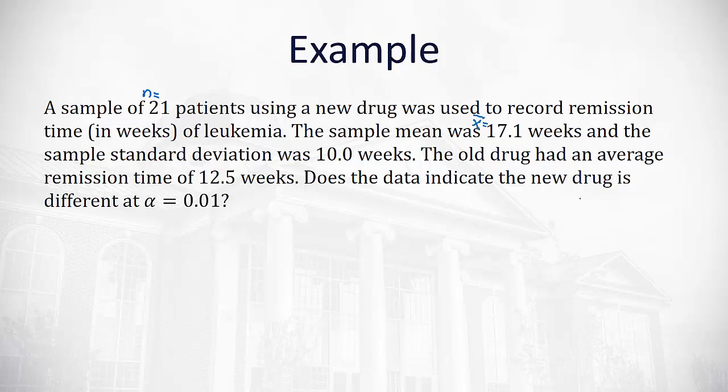The sample standard deviation, so just out of these 21 patients, s is 10 weeks. The old drug that was used in this case in the past has a remission time of 12.5 weeks. That's what we're going to claim our average is, and we're going to see if the new drug is different at the 0.01 alpha level.